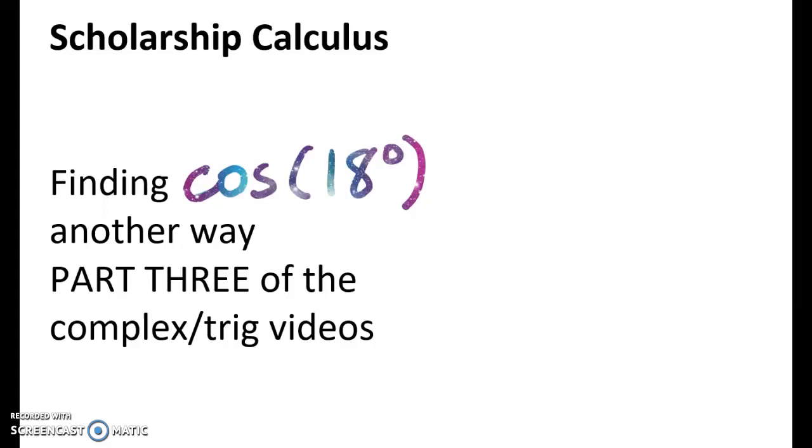Kia ora, Year 12 and 13. This is the third video I'm making in a row looking at trig identities. This one doesn't use any complex numbers, but we're going to try and find a different way to find the cosine of 18 degrees.